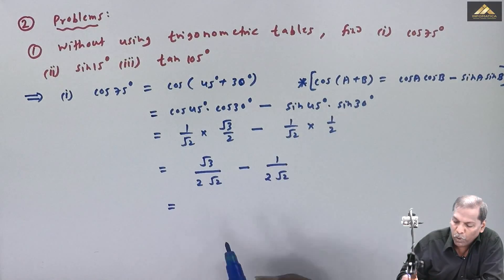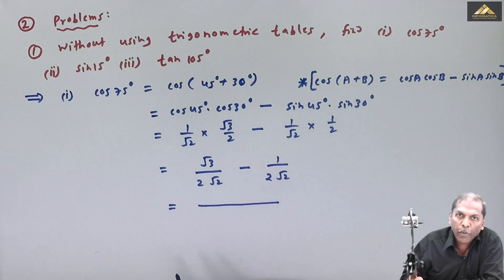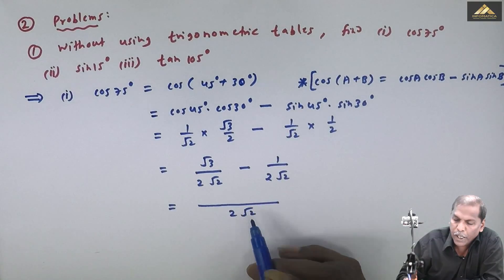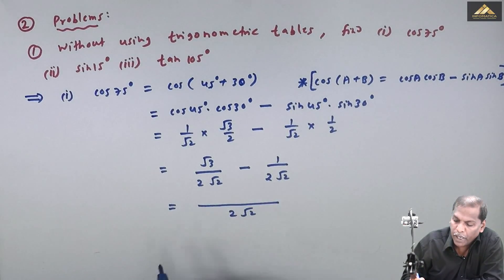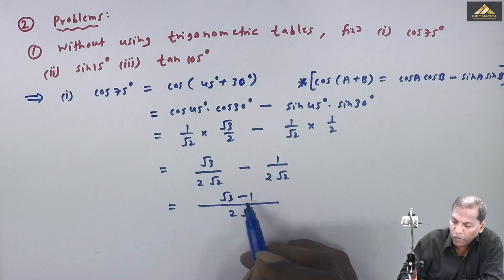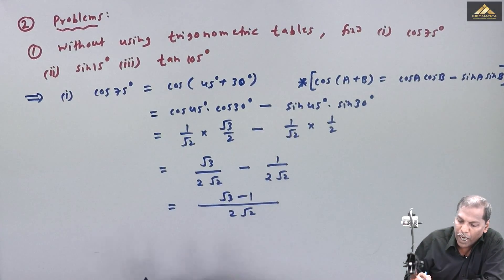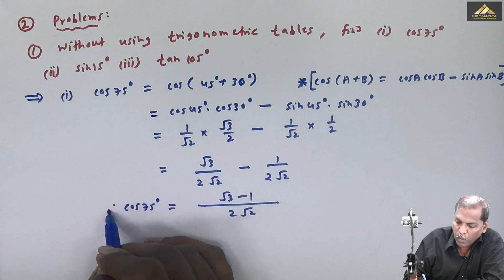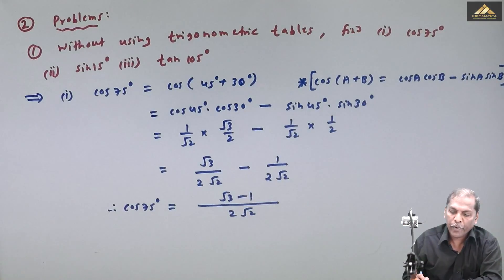So that is equal to, observe here the denominator is the same. So we take 2 root 2 as LCM. In the numerator we get root 3 minus 1. So this is the answer for cos 75 degree.